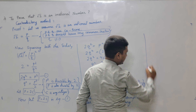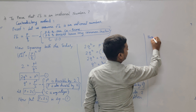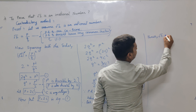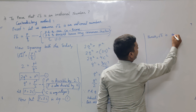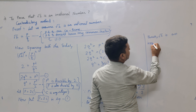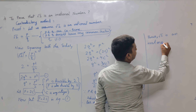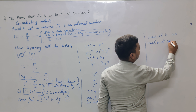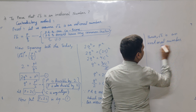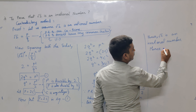Hence, root 2 is an irrational number. Hence proved.